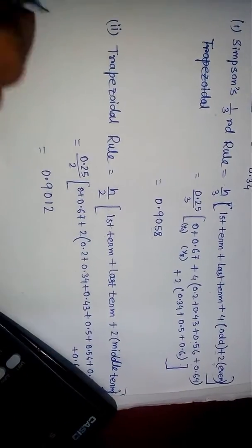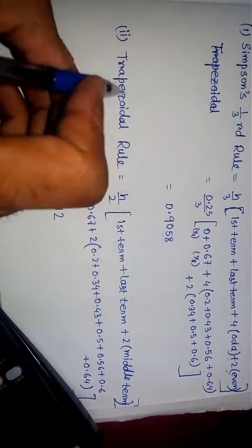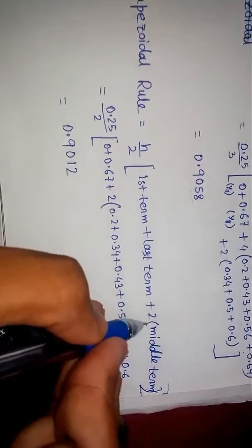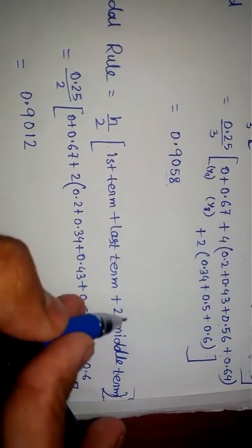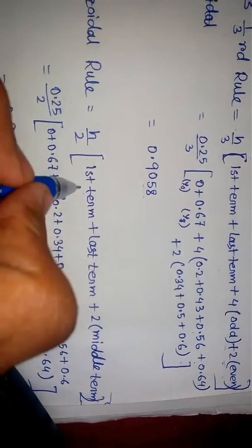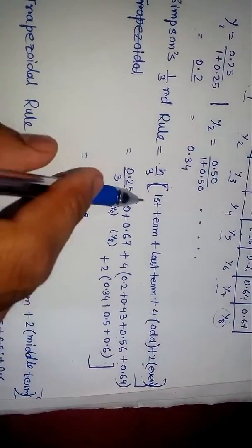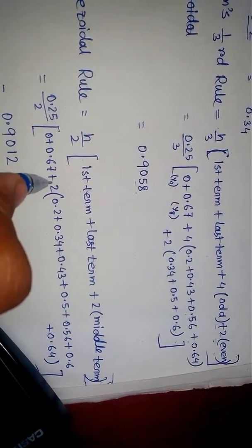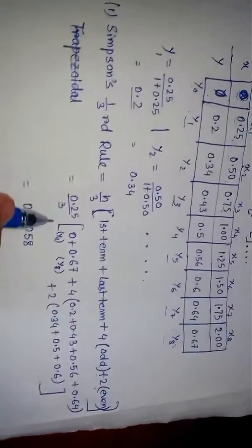Now for trapezoidal rule. The trapezoidal rule says: (h/2) times [first term plus last term plus 2 times middle terms]. Here, the first term and last term are the same as written before.